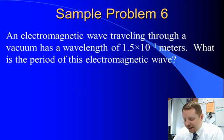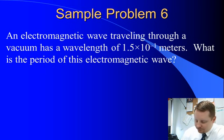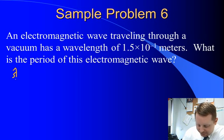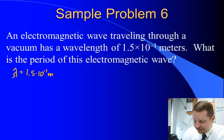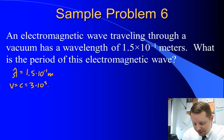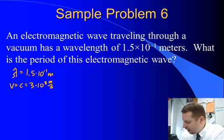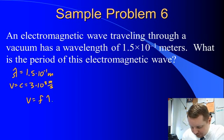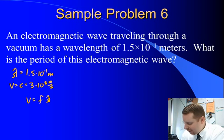An electromagnetic wave traveling through a vacuum has a wavelength of 1.5 times 10 to the minus 1 meters. What is the period of this electromagnetic wave? All right. Well, we know that it has a wavelength, lambda, of 1.5 times 10 to the minus 1 meters. And since it's an electromagnetic wave traveling through a vacuum, we know its velocity is that constant c, or 3 times 10 to the eighth meters per second. We need to find period.